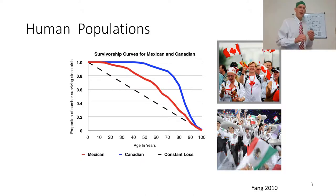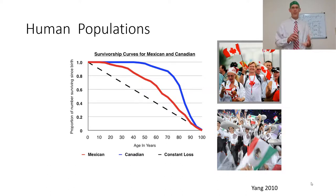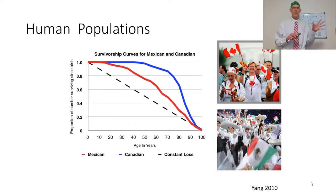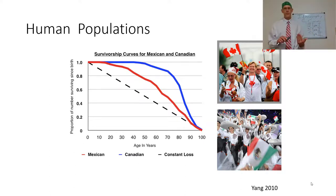Human populations are somewhere between a Type 2 and Type 1, and it actually depends on healthcare. Canadian healthcare is pretty good, so the proportion surviving to a longer age is much higher. Healthcare in Mexico is not as good, giving a life curve a little bit closer to Type 2 — but being old is still going to be your highest risk for humans, and we are generally more of a Type 1. If you see the curve moving towards a Type 2, it generally means there is a lot of disease in the population.